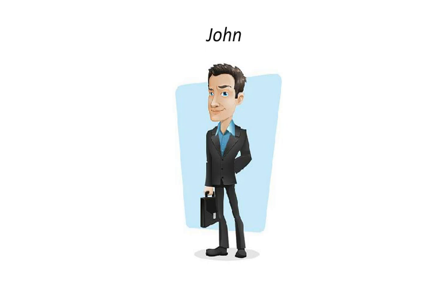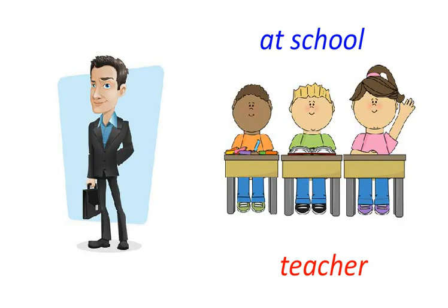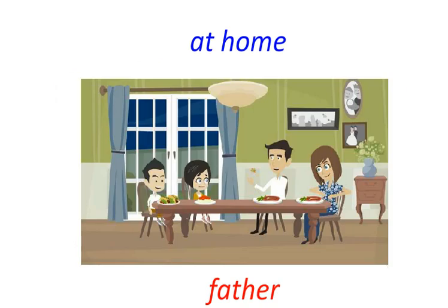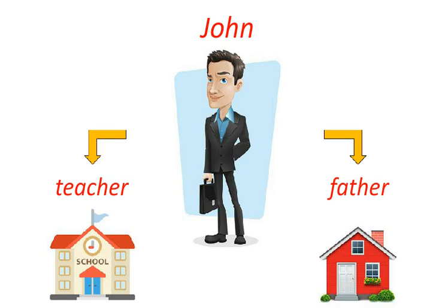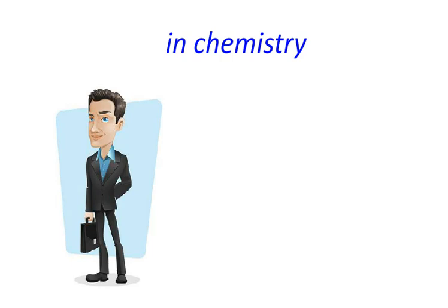In order to simplify this idea, let's talk about John, for example. John is a teacher, so at school his students call him teacher, but at home his children call him father. So John has different names depending on his position or his role in society.